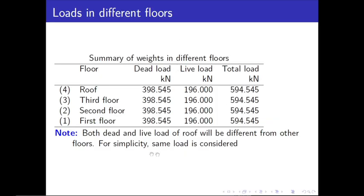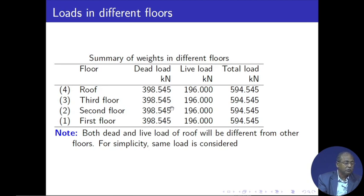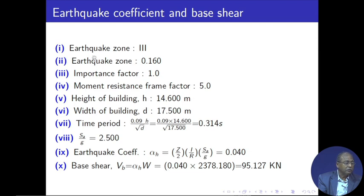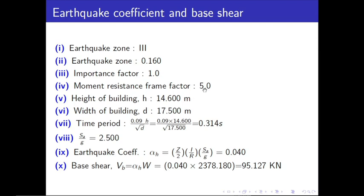We have already computed the loads. Now we have to find out the earthquake load. As informed, the earthquake zone is 3, and for that we are getting 0.16 as the zone factor, importance factor is 1, and moment resistance frame factor is 5. This information we shall get from IS 1893.